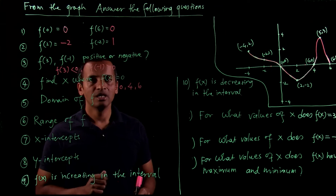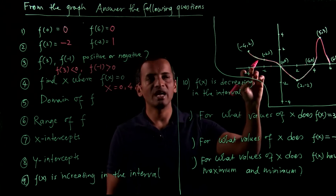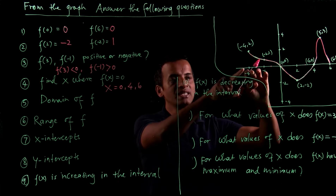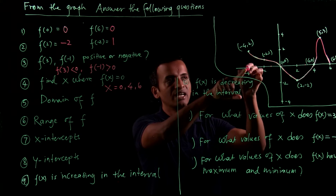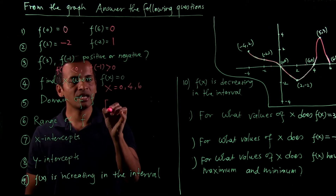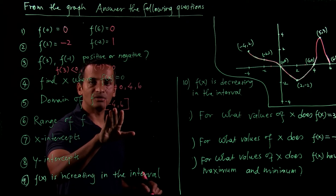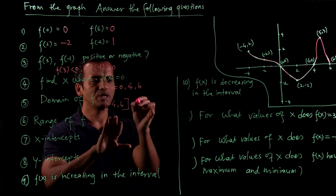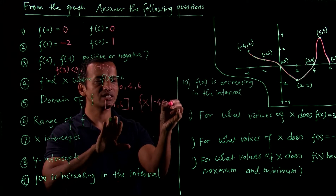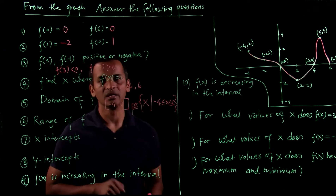What is the domain of f? The domain is all possible values of x. The smallest value of x is negative 4 and the highest value of x is positive 6. The function is defined at both endpoints, so the domain is negative 4 through positive 6. You can also write it as: x such that negative 4 ≤ x ≤ 6.